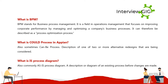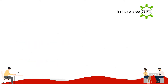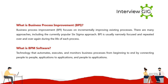What is a 'could be' process in Appian? It is sometimes a description of one of two or more alternative redesigns being considered. What is an 'as-is' process diagram? It is a description or diagram of an existing process before any changes are made. What is business process improvement (BPI)? BPI focuses on incrementally improving existing processes. There are many approaches, including the popular Six Sigma approach. BPI is usually narrowly focused and repeated throughout the life of each process.